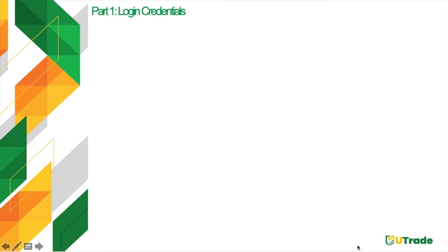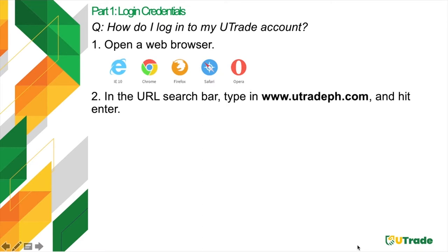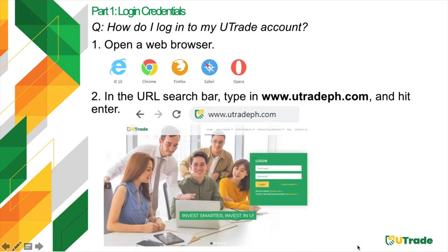Let's start off by knowing how to log in to your UTrade account. The first step is to open a web browser. Most web browsers available support our online trading platform. If you are an Apple user, do not worry because our trading platform works well with Safari. In the selected web browser's URL search bar, type in www.utradeph.com and then hit enter. You will then be directed to our UTrade homepage.